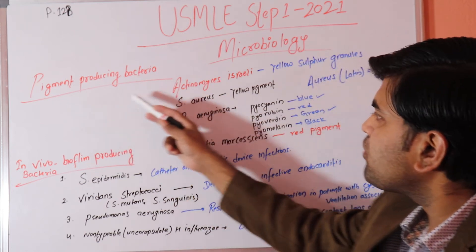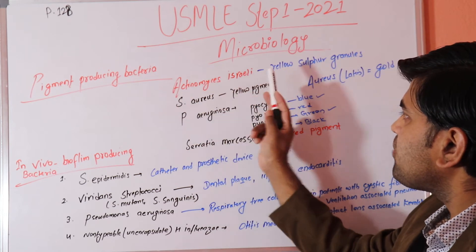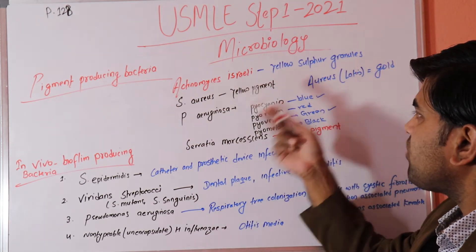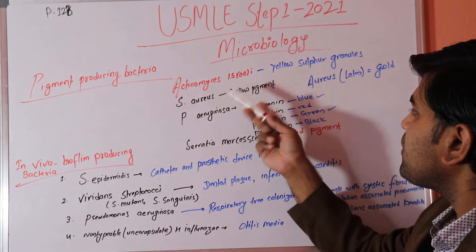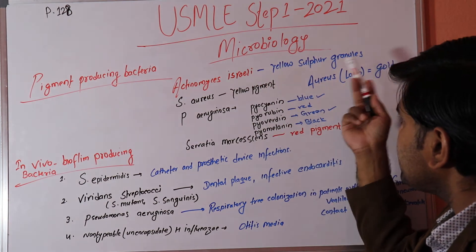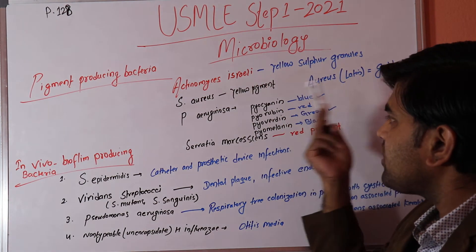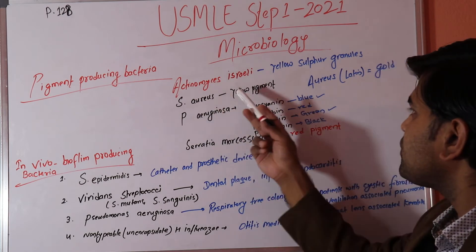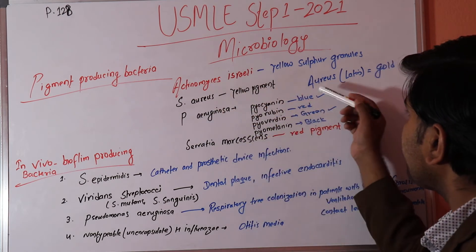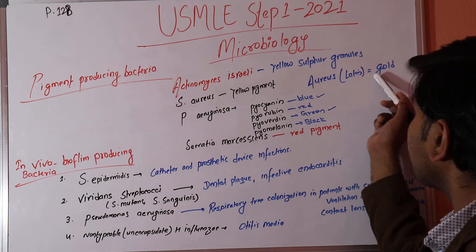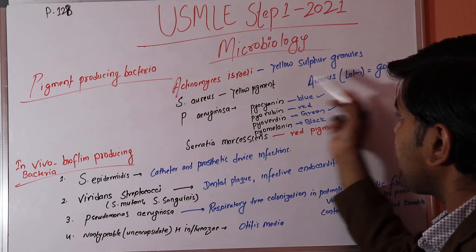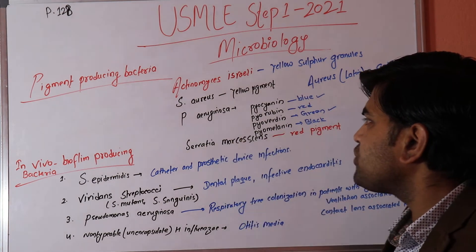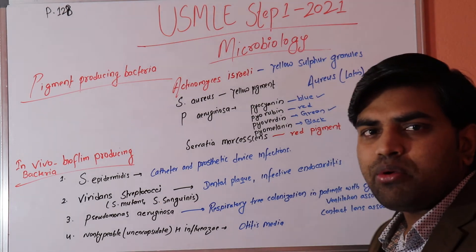Starting with pigment-producing bacteria: Actinomyces israelii produces yellow sulfur granules — a memory aid is 'yellow sand in Israel.' Staph aureus produces yellow pigmentation because 'aureus' is Latin for gold. Pseudomonas aeruginosa produces several pigments.